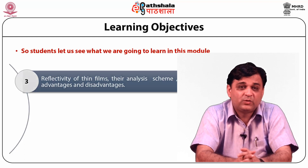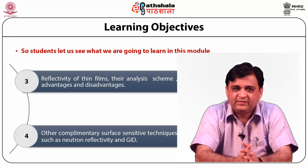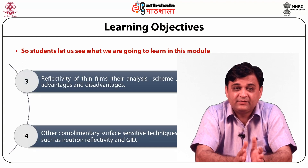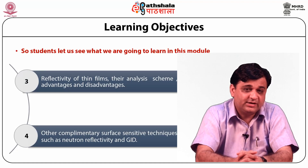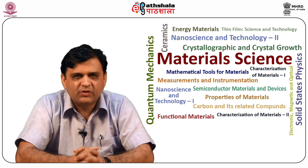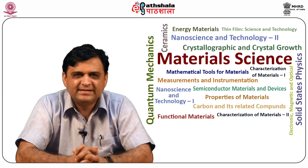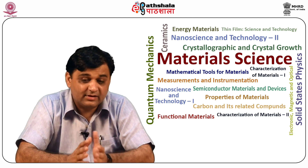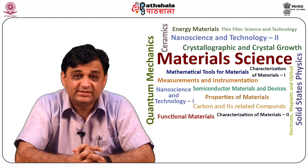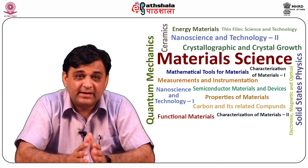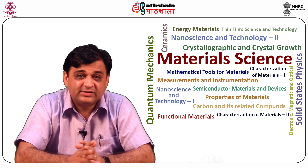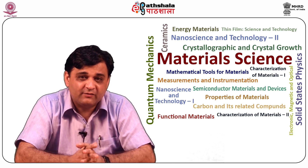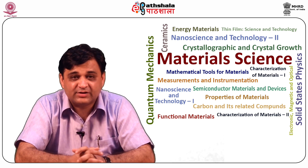We will also explore other complementary surface sensitivity techniques such as neutron reflectivity and GID. In this module I will talk about grazing incidence x-ray scattering techniques, introducing what grazing incidence is all about, to analyze the morphology and structure of interfaces and thin films. These are called indirect techniques because we need to analyze data to get information such as thickness, roughness, and surface structure.